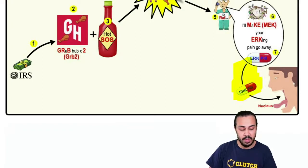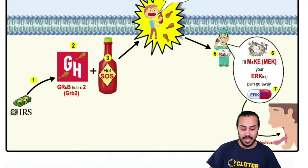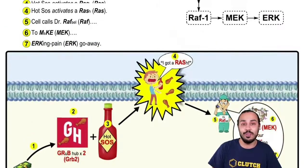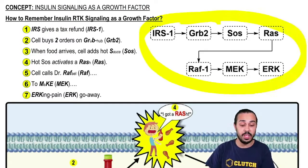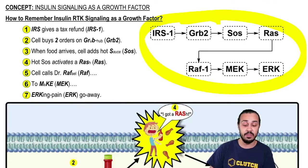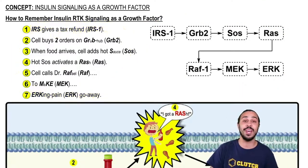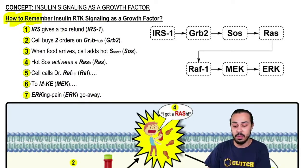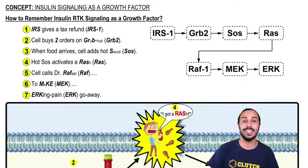In step 7, the ERK pill is going to make its way into the nucleus — the guy's mouth in the image represents the nucleus. It's a silly, crazy story, but it can be really helpful for memorizing the most important components of this pathway in the correct order. By practicing this story just a handful of times, you'll get it down no problem. This concludes our lesson on how to remember insulin RTK signaling as a growth factor, and we'll get some practice in the next couple of videos.